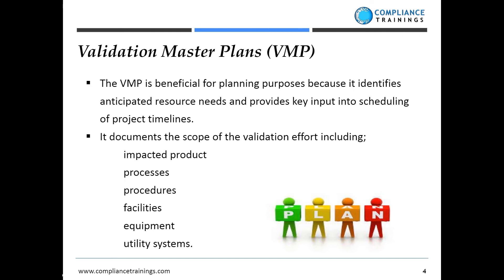It documents the scope of your validation efforts. You're going to have information about impacted products in your validation master plan, procedures, facility, equipment that needs to be qualified, and any types of utility systems that need to be qualified or validated. Your validation master plan includes everything — not just equipment, but facilities and utilities — and it's going to talk about which products are impacted by the various equipment qualifications and which processes have to be validated in order to manufacture particular products.